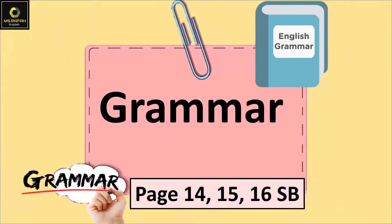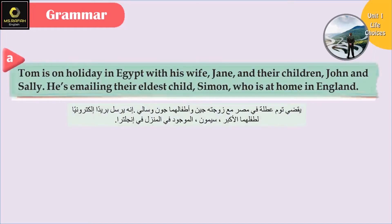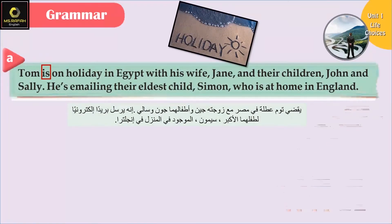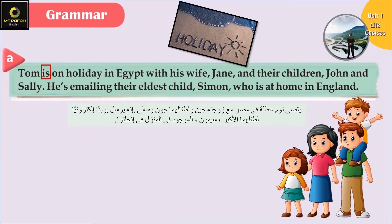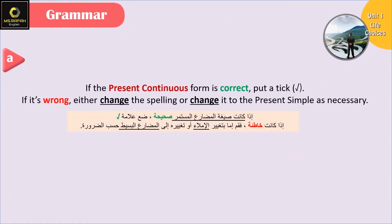With grammar we have a revision of tenses. Question number 1: Tom is on holiday in Egypt with his wife Jane and their children John and Sally. He's emailing their eldest child Simon, who's at home in England. The question is: if the present continuous form is correct, put a tick; if it's wrong, either change the spelling or change it to the present simple as necessary.